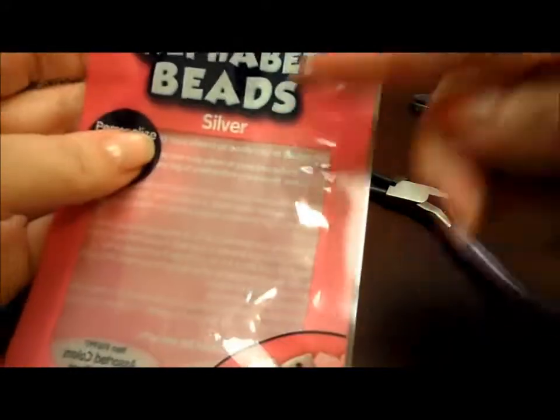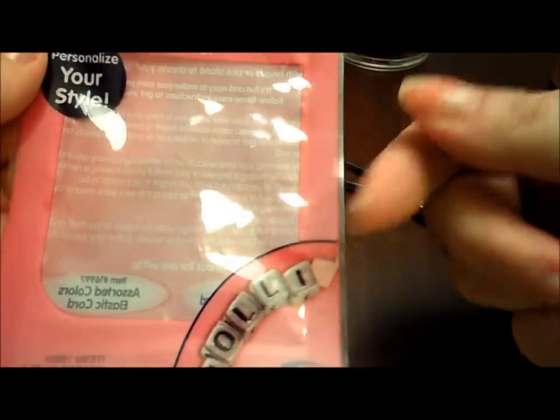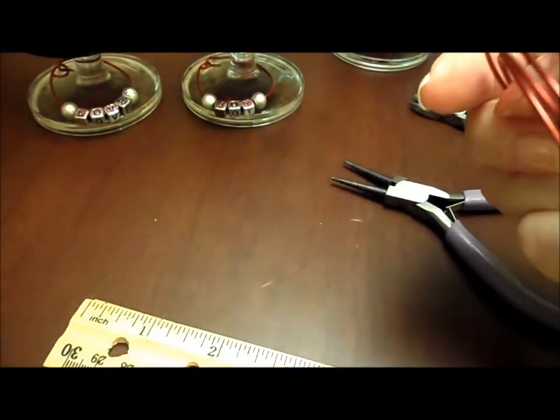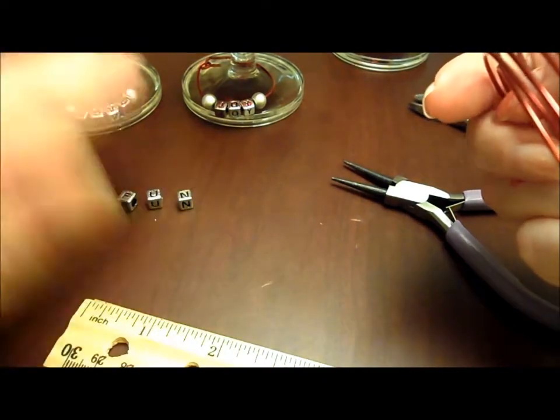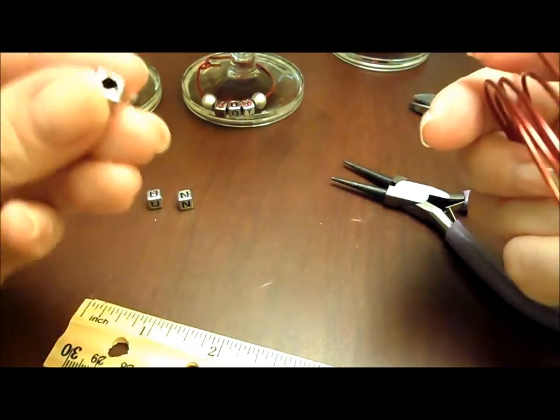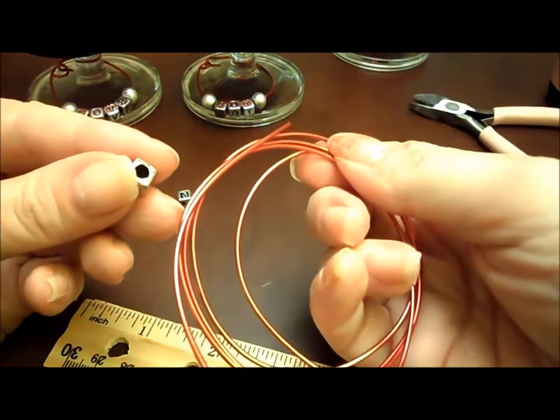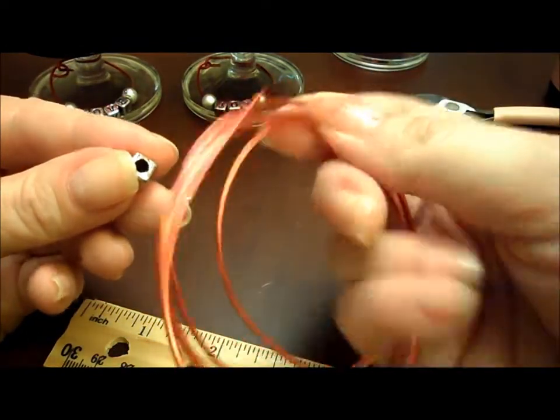Then you're going to need some alphabet beads. You can find these in different colors, different shapes, different styles. I got the silver ones. I like that look. Just make sure that your wire will go through the hole in the bead.